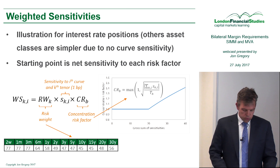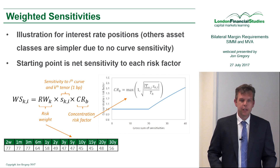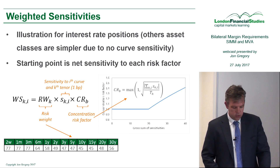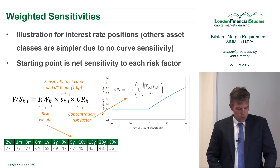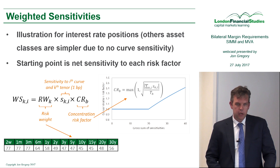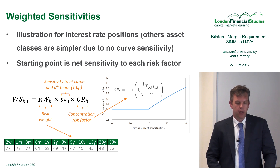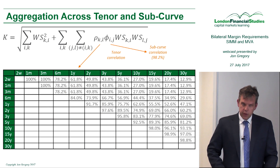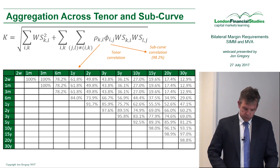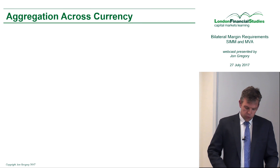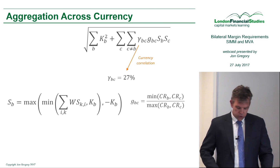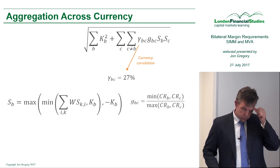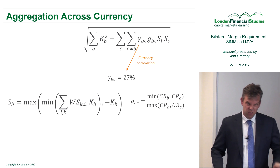This is what's known as a weighted sensitivity. My starting point is my net sensitivity to each risk factor. That's how you aggregate within a single currency. Then we have to specify how you aggregate across currencies, and I've given you all the formulas here.